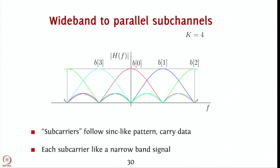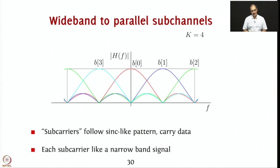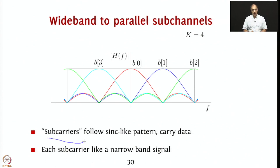To recall our previous discussion on OFDM, we concluded that if you look at OFDM as repetition of symbols combined with frequency shift — that is, if you repeat B0 multiple times, B1 multiple times, and multiply them by appropriate vectors — then the resulting waveform in the frequency domain shows that B0 occupies a spectrum close to 0 Hz, B1 close to W/4 Hz, B2 close to W/2 or minus W/2 Hz, and B3 close to minus W/4 Hz. These are called sub-carriers, which follow a sinc-like pattern in the frequency domain and carry data.